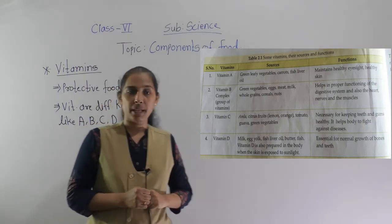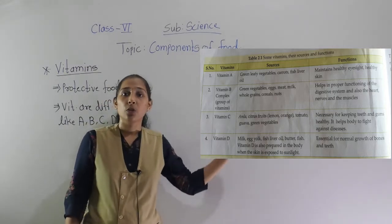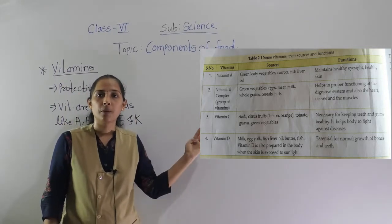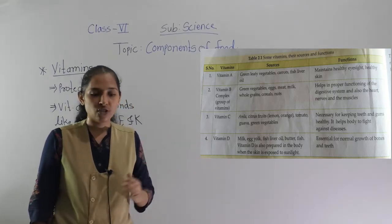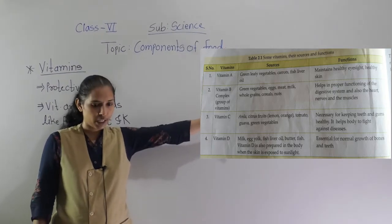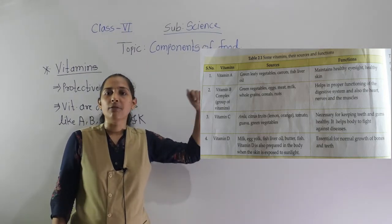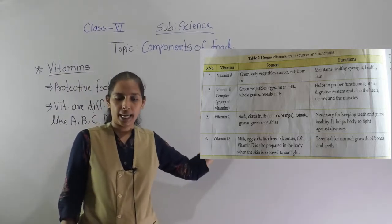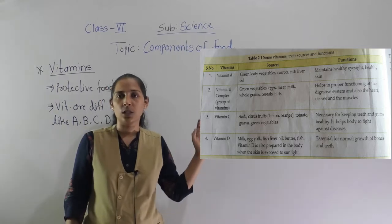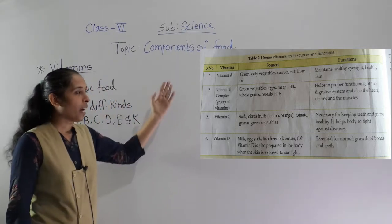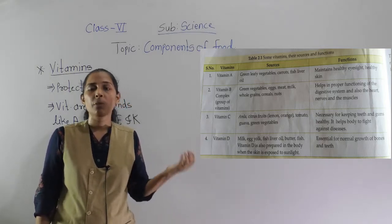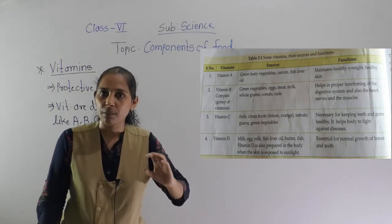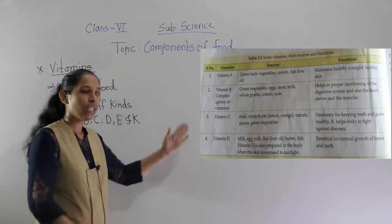Let's move to the next vitamin, vitamin C, which is also very important for our body. The sources of vitamin C are amla, citrus fruits like orange and lemon, tomato, guava, and green vegetables. All these are the sources of vitamin C from which we get this important nutrient.